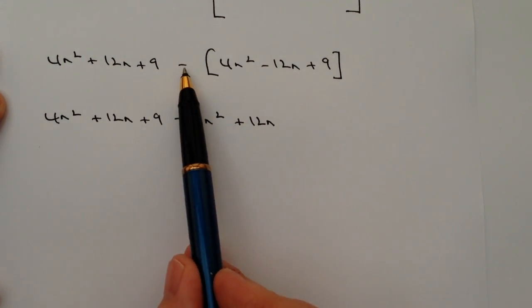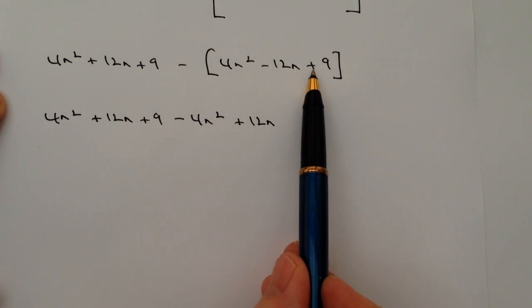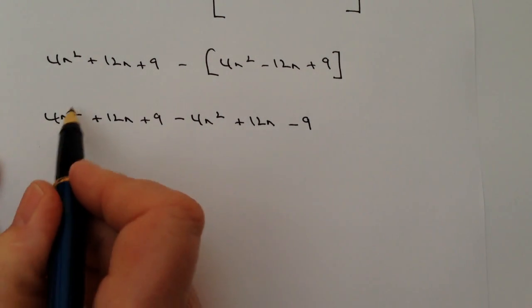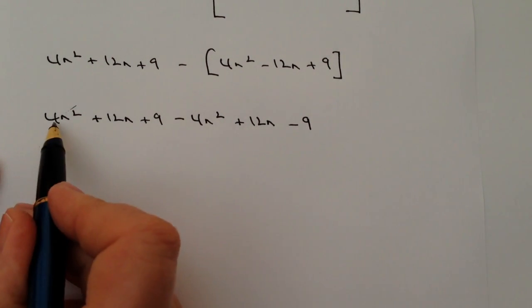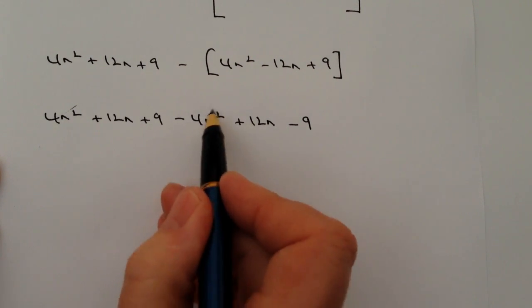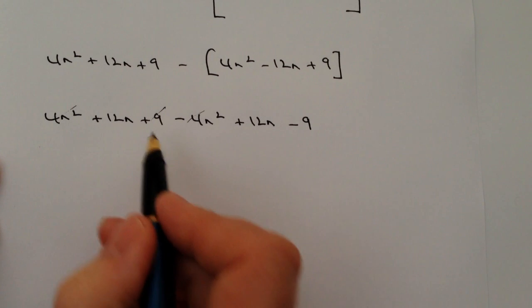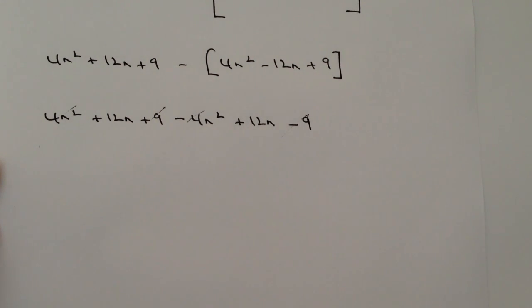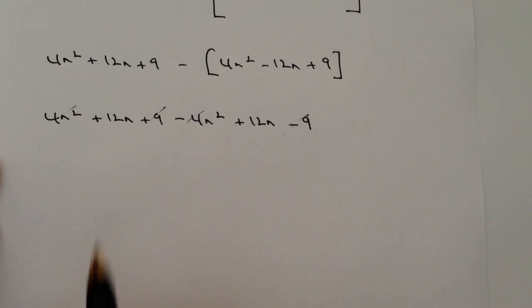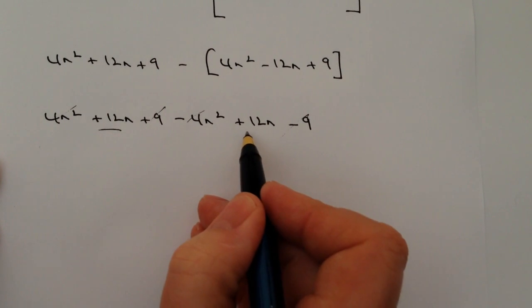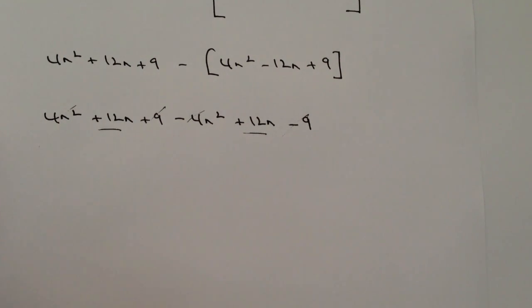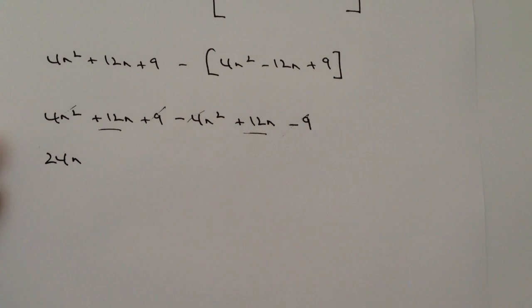And then we've got minus, times a plus, we've got a minus 9. And then it's really just a case of tidying this up. And what you'll find is that these terms will cancel themselves out. So we've got 4n squared minus 4n squared, I'm going to cancel out. I've also got plus 9 and minus 9. That's going to cancel itself out. The last thing I've got is plus 12n and plus 12n there. So that's going to be 24n.